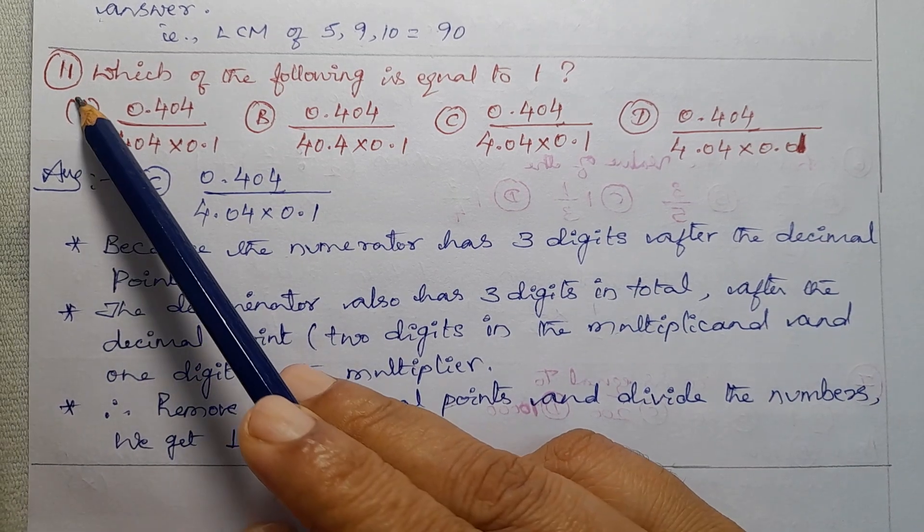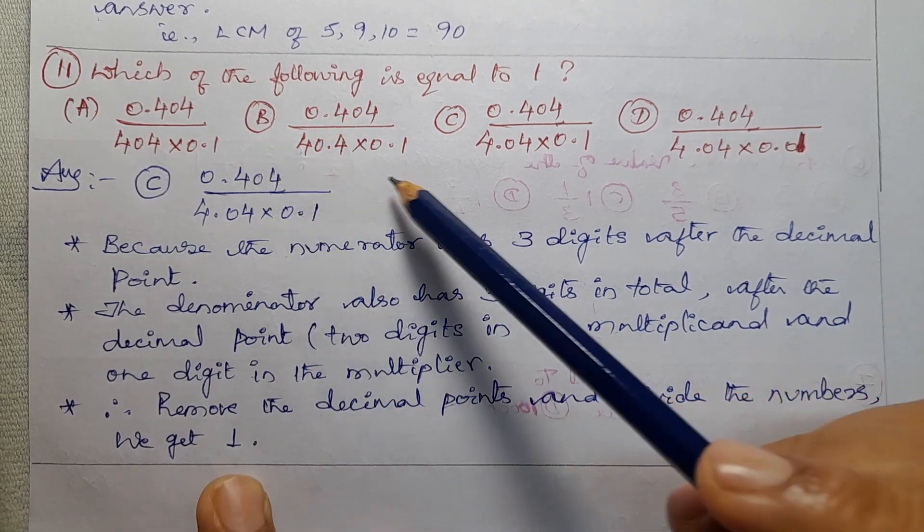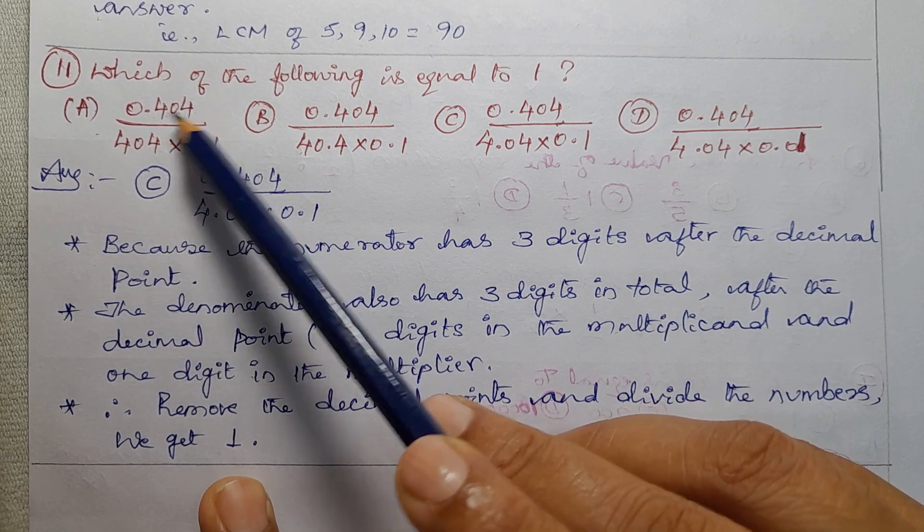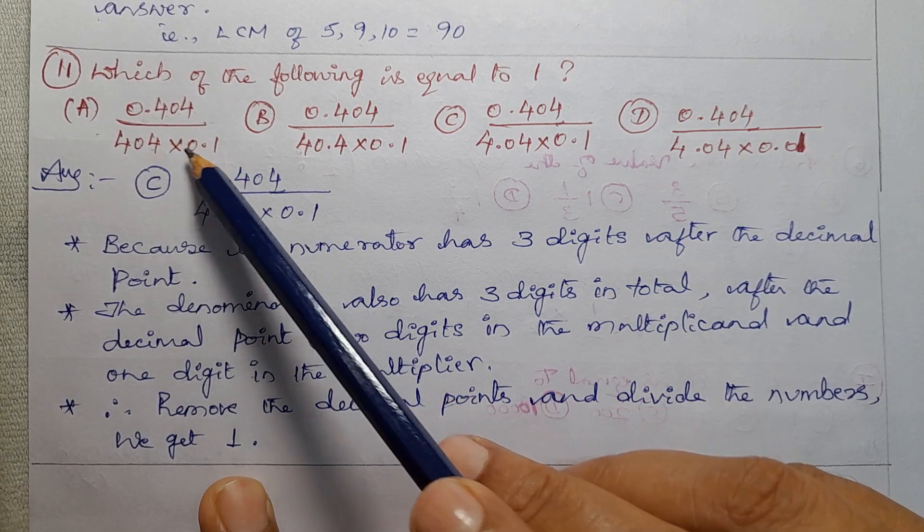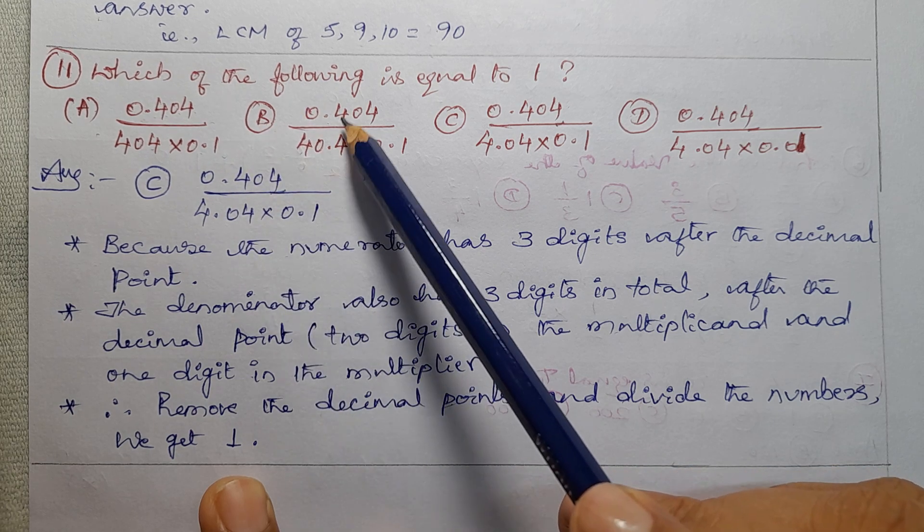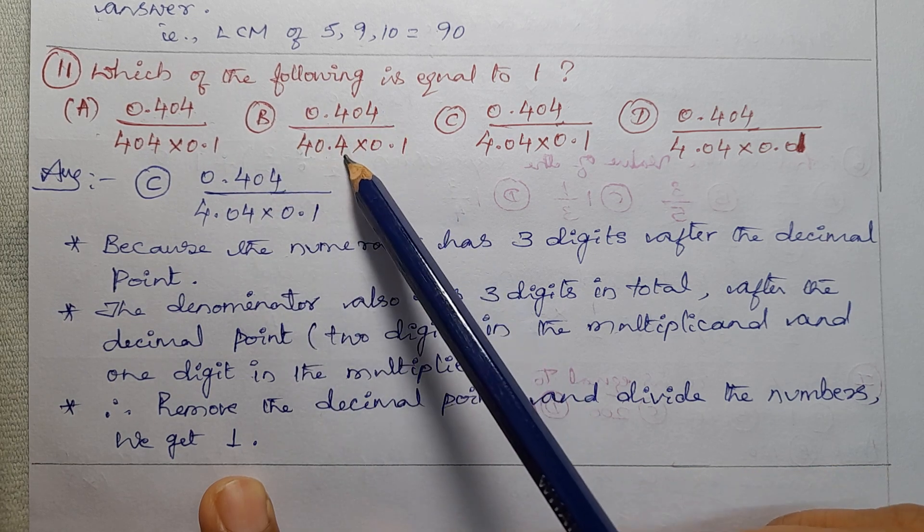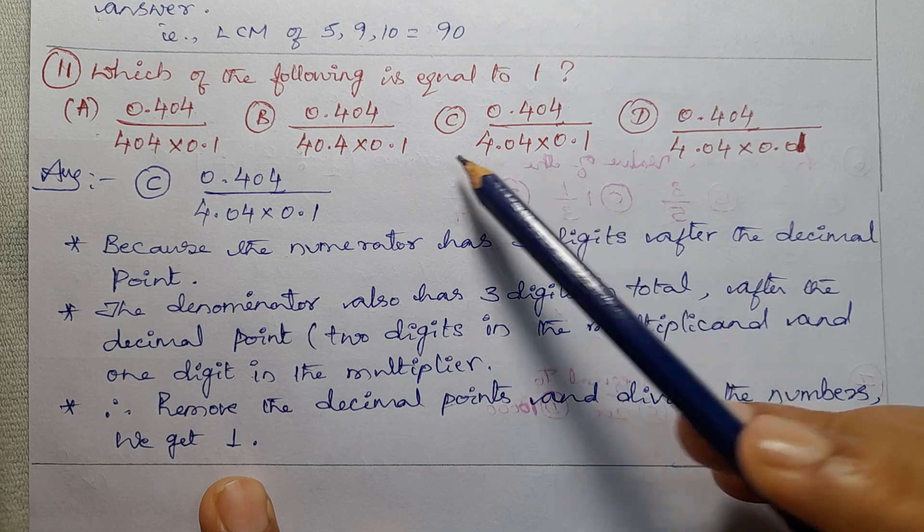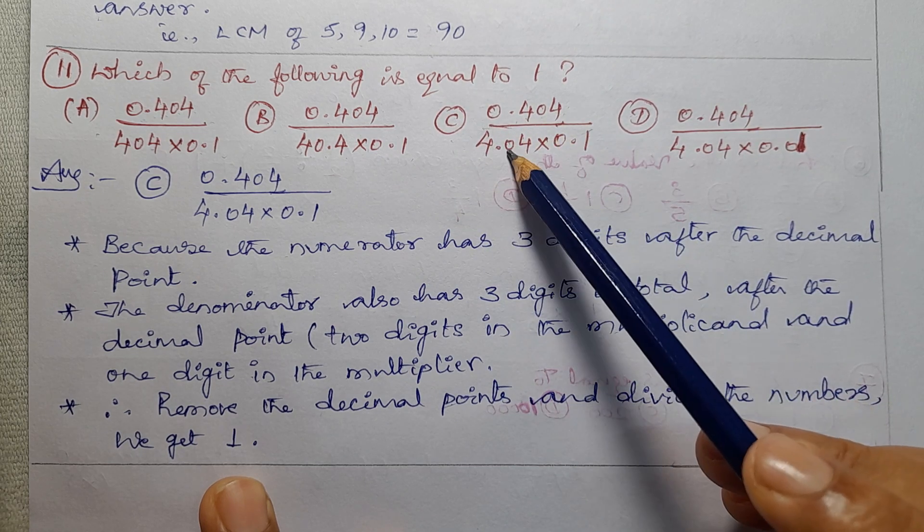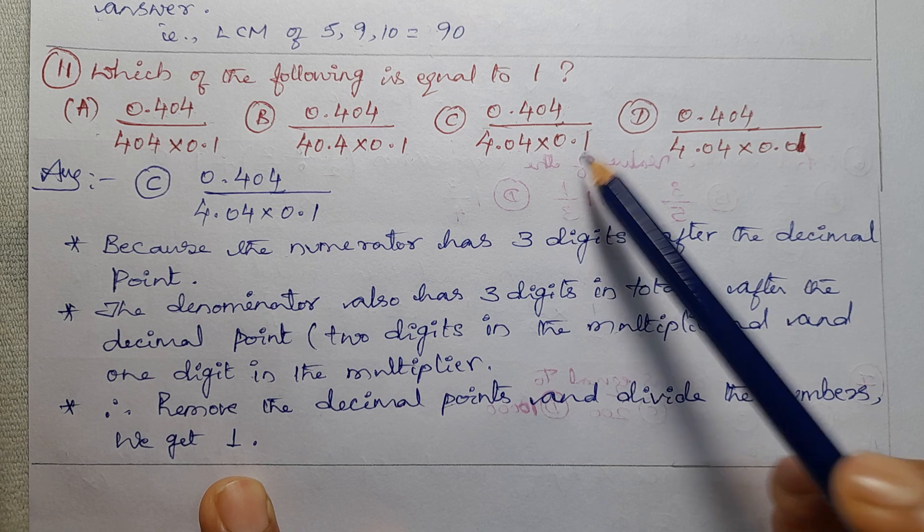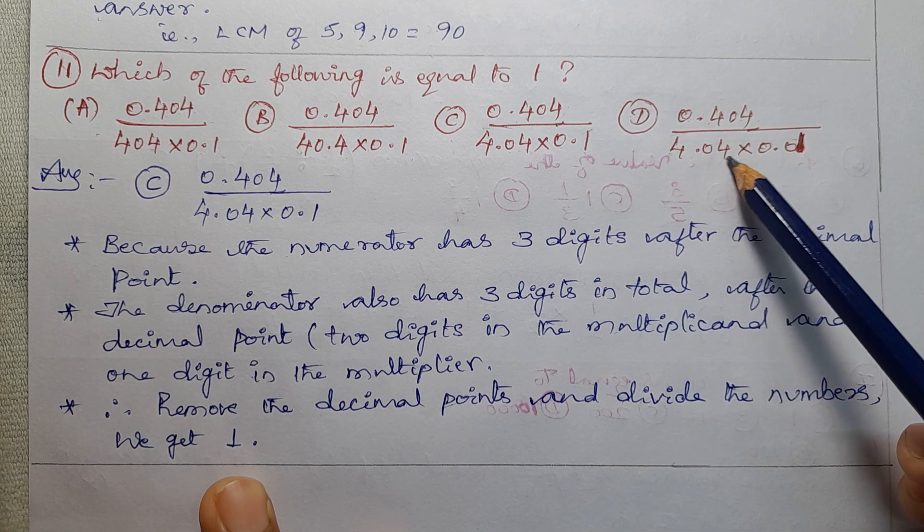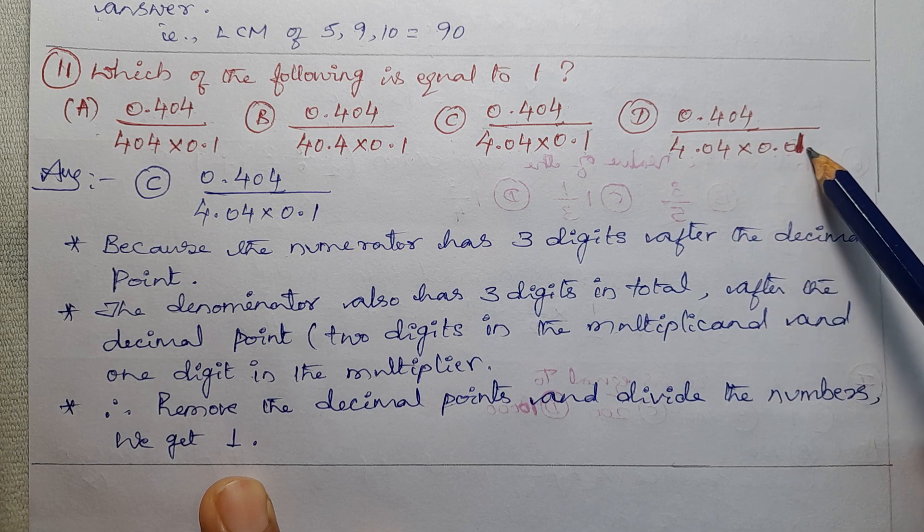Question No. 11: Which of the following is equal to 1? Option A: 0.404 divided by 40.4 into 0.1. Option B: 0.404 divided by 40.4 into 0.1. Option C: 0.404 divided by 4.04 into 0.1. Option D: 0.404 divided by 4.04 into 0.1.